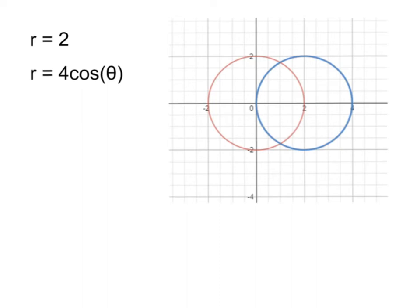In this video we're going to look at finding the area shared by the two circles r equals 2 and r equals 4 cosine theta.